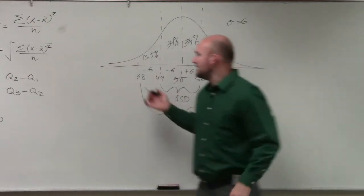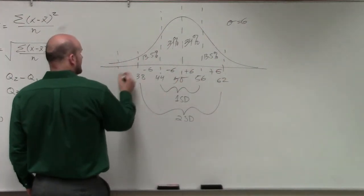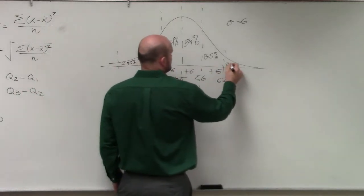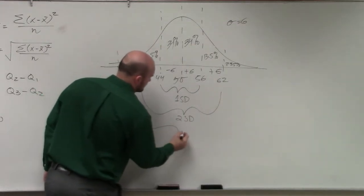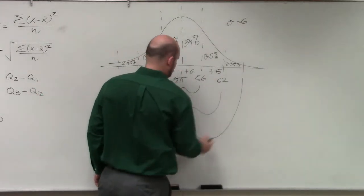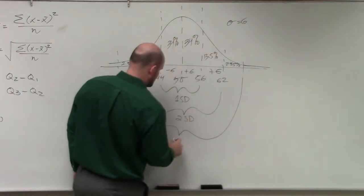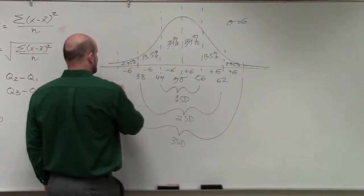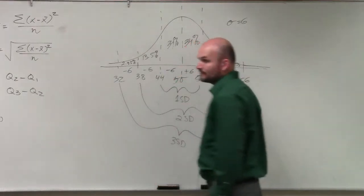Then we can do a third standard deviation. And that is 2.35% and 2.35%. So that's our third standard deviation. And basically, all we're doing is adding 6 again and subtracting 6. In this example, we'll have 32 and 66. OK?